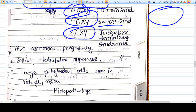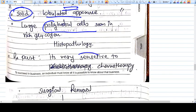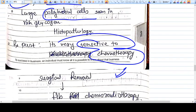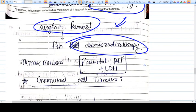It's common in pregnancy, has solid lobulated appearance with large polyhedral cells. It's very sensitive to chemotherapy, contrary to clear cell carcinoma which was chemo-resistant. Treatment is surgical removal followed by chemotherapy with good survival rate. Tumor markers include placental ALP and LDH.